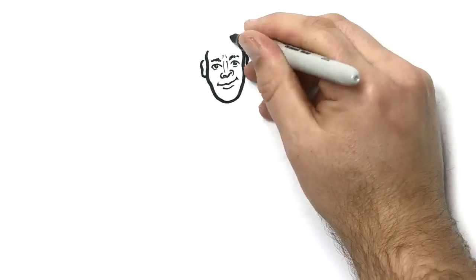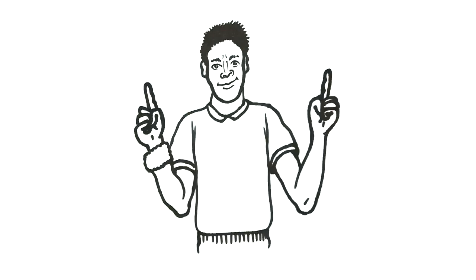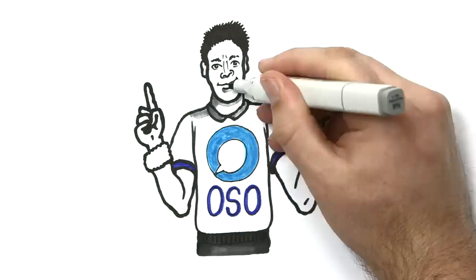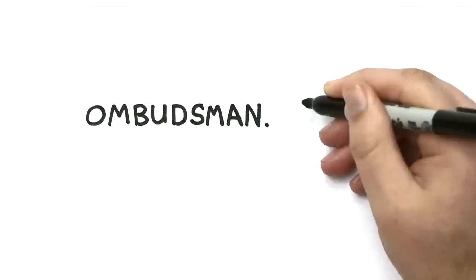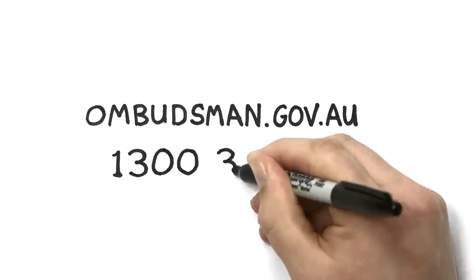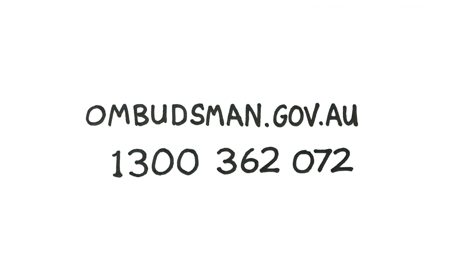The service is free, independent, and impartial. Impartial because the OSO will make a decision based on the facts, and it might favor you or the education provider. You can complain online at www.ombudsman.gov.au or by phoning 1300 362 072.